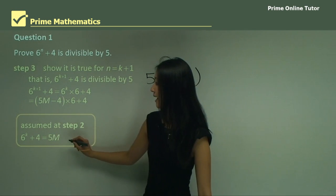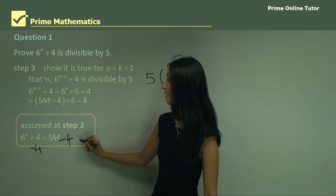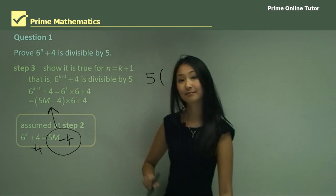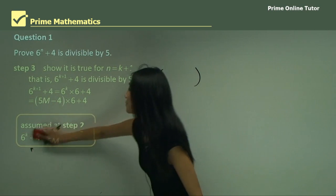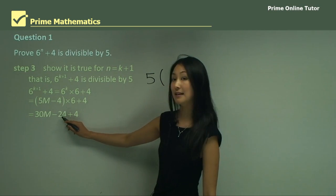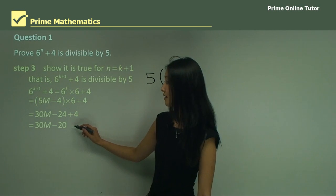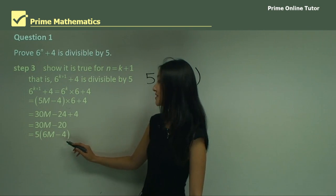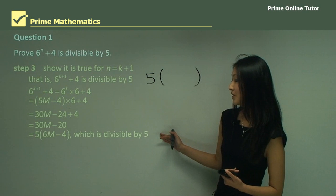If we subtract four from both sides we get six to the power of k equals five m minus four, which is what we substitute in. So instead of six to the power of k we write five m minus four, and now we expand that: five times six gives 30m, negative four times six is minus 24, plus four, which is 30m minus 20. Factorizing out five leaves us with five times the quantity six m minus four, and we can say that is divisible by five.